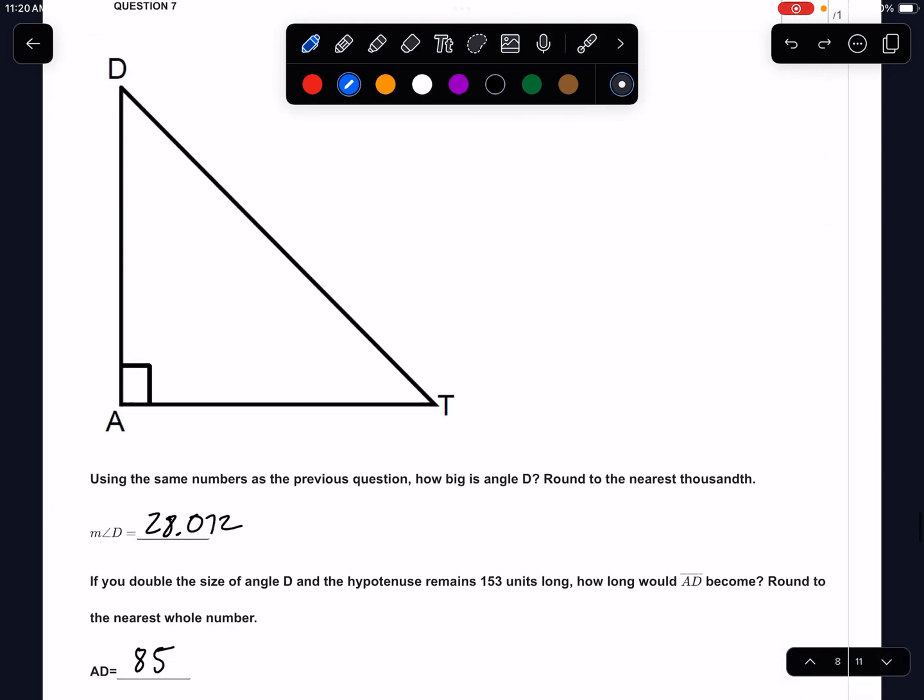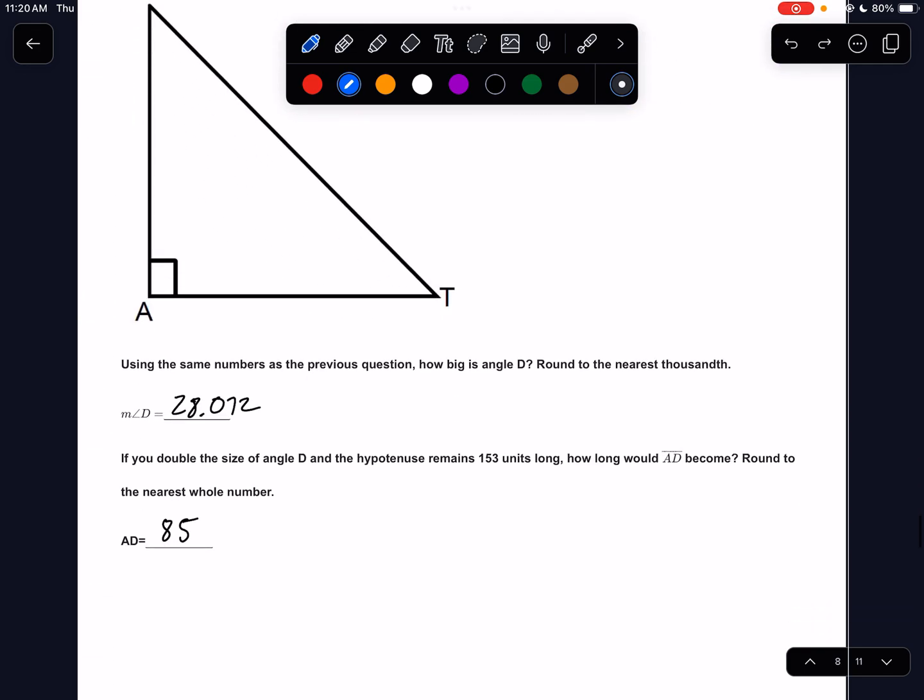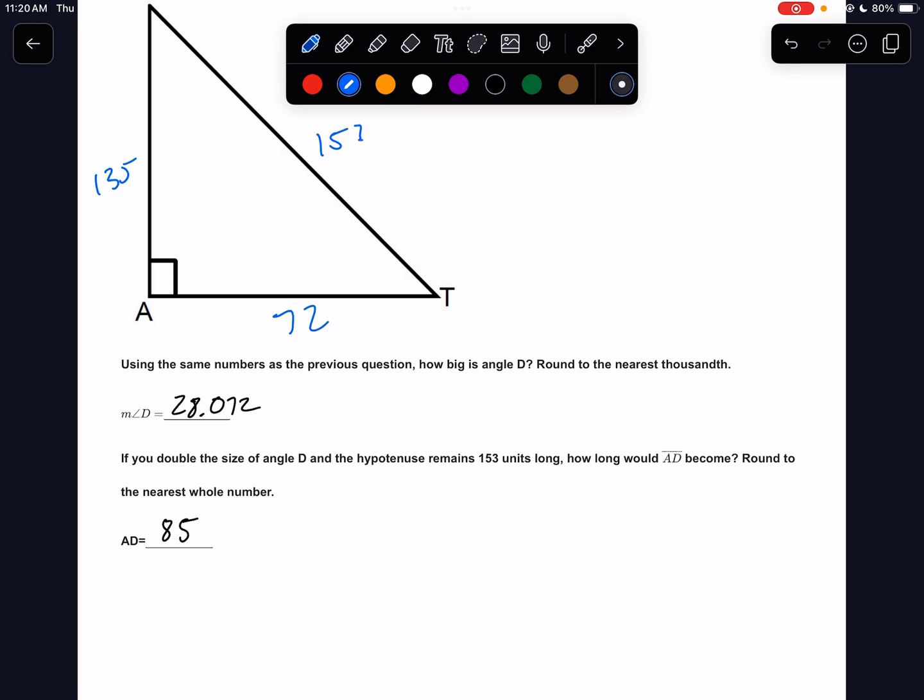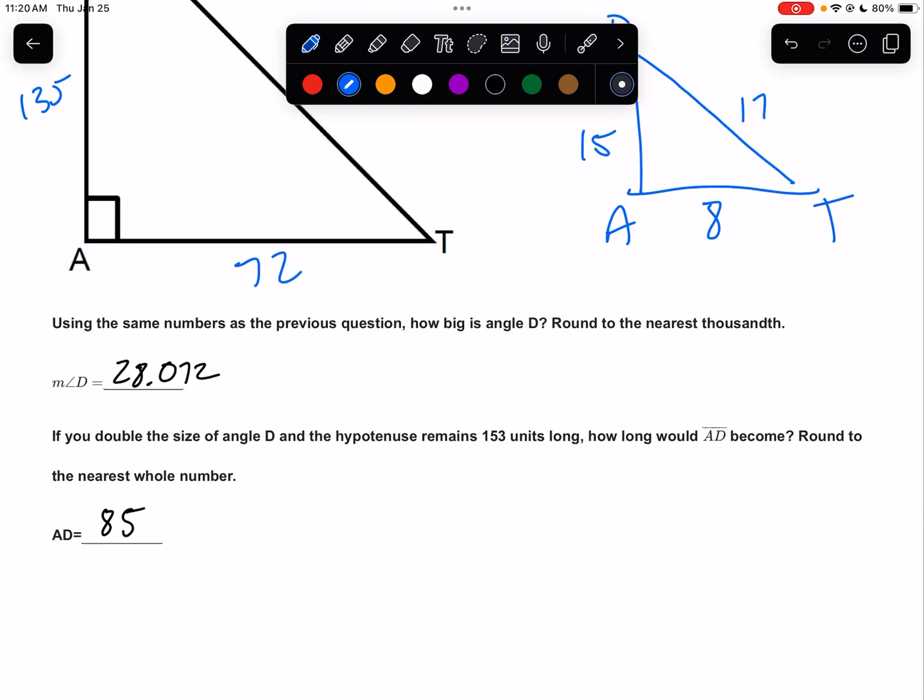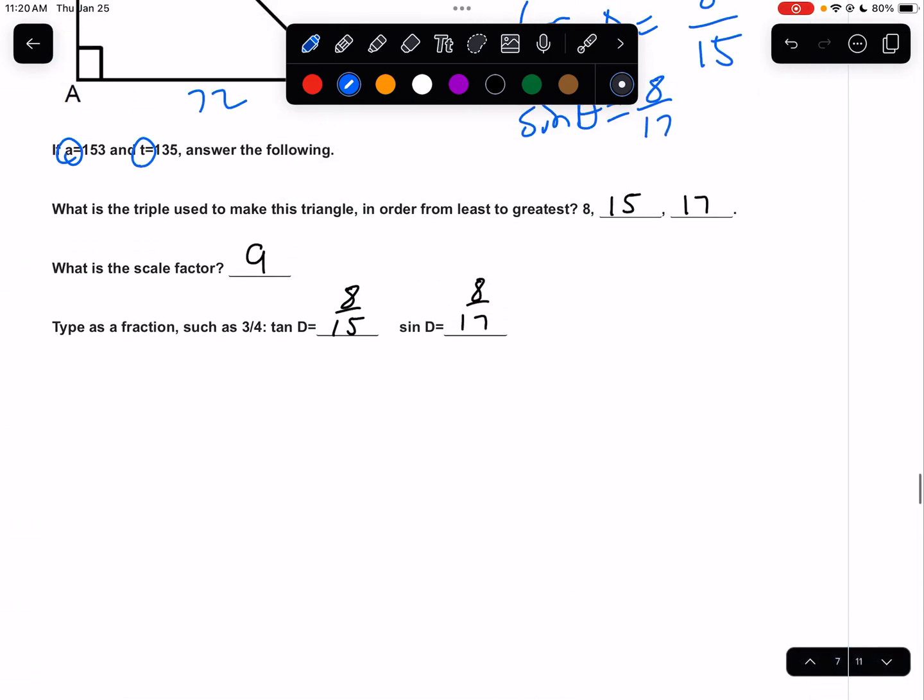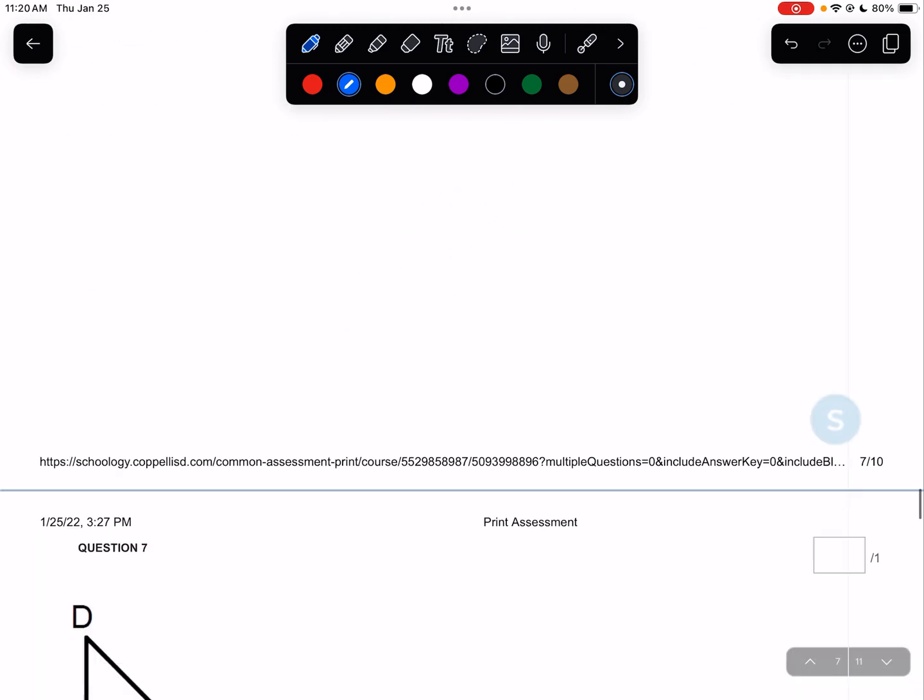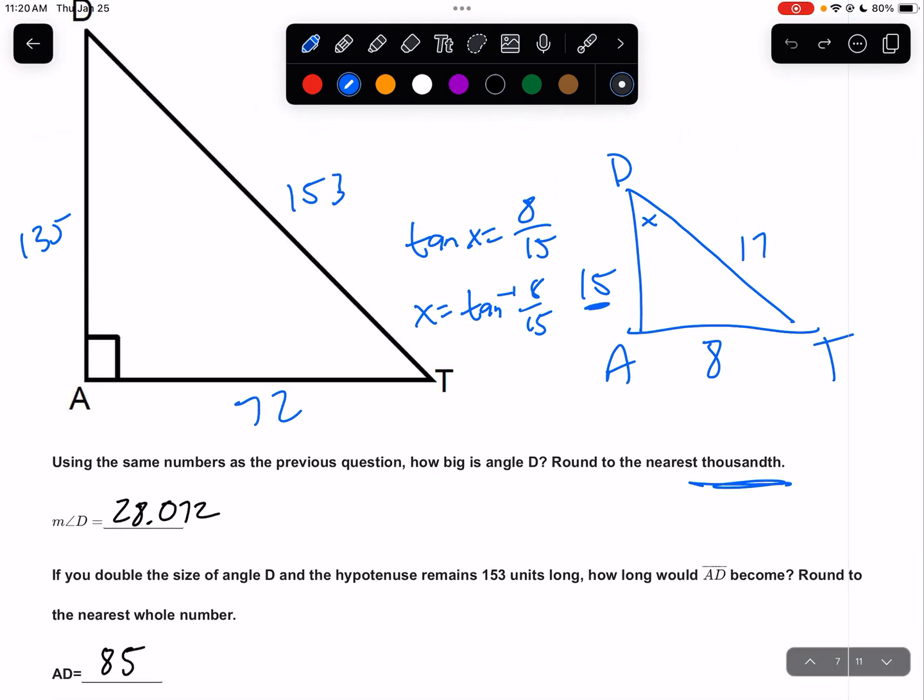Using the same numbers as the previous question. Okay, let's go get those real quick. Like 72, 135, and 153. And remember, if we draw the smaller version, that that was 8, 15, and 17. And these are angles d, a, and t. Okay. Using the same numbers as the previous question. How big is angle d? So I'll call this x. So that means the tangent of x equals opposite 8 over 15 adjacent. So x would equal inverse tangent 8 over 15. Inverse tangent 8 over 15. I get 28.072, round of the nearest thousandths. Is that the only way to do it? Nope. I could have done, like, I mean, we'd have set it up over here. Like, could we have done inverse sine of 8 over 17? Yep. Could we have done inverse cosine of 15 over 17? Yes. So we could have done sine, cosine, or tangent. We knew all the numbers. We could do any combination.